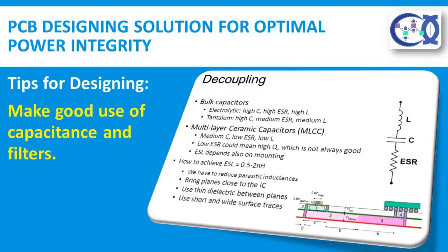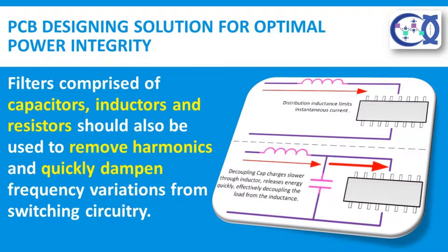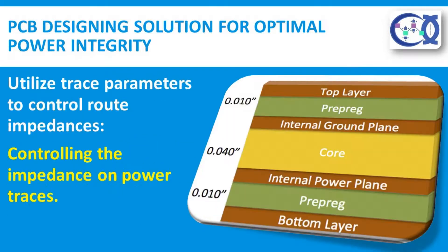These objectives can be simultaneously achieved by employing the following tips into your design process. Make good use of capacitance and filters. Capacitance can be used to improve power integrity in a number of ways. First, the PCB stack-up materials should be chosen to manage the board capacitance across a range of frequencies. Bulk capacitors can also be used to mitigate voltage drops due to trace inductance. Additionally, decoupling capacitors may be placed between adjacent signal paths to minimize interference.